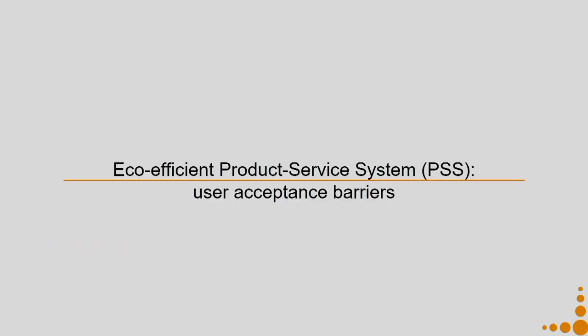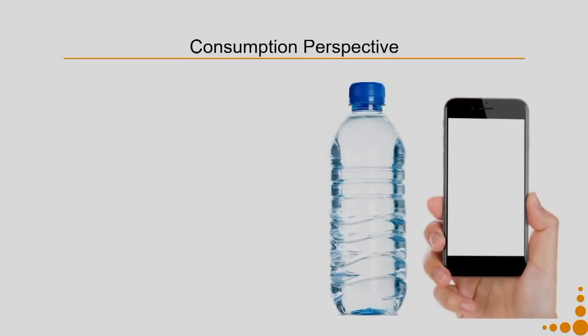For eco-efficient product service systems, user acceptance barriers exist. For example, mobile phones - because of internet and smartphone penetration, we require a certain kind of mobile phone; it has become a necessity. After one or two years, the demand from our way of consuming requires a much better system, better RAM and better configuration. So we want to discard our phone and get a new one - that is an individual's choice.